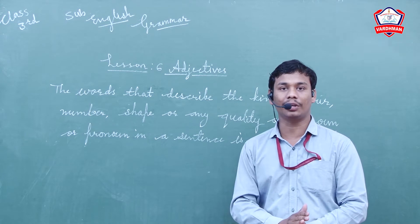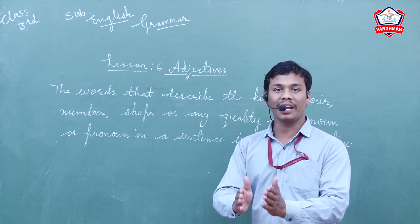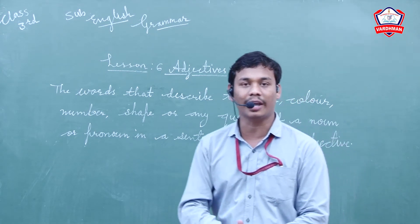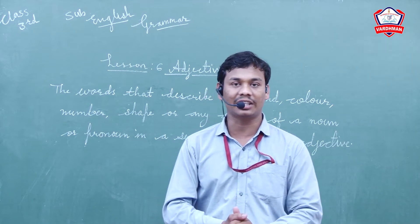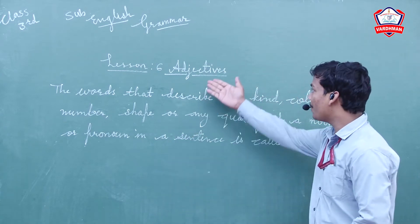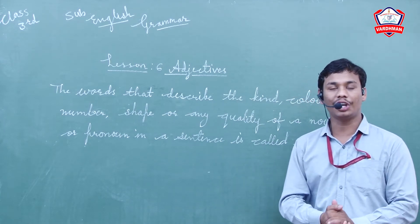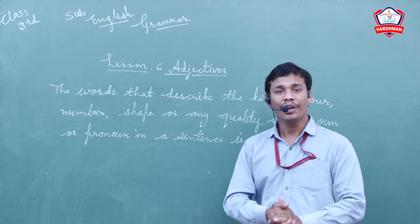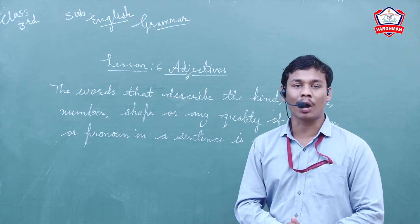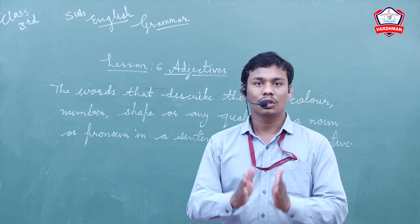Adjectives are words that describe characteristics - tall, thin, special qualities. Normally we call them adjectives or visheshan. So adjective means visheshan. The words which describe noun or pronoun - what will be the definition?